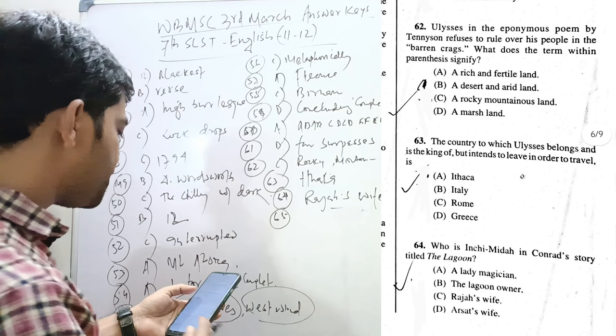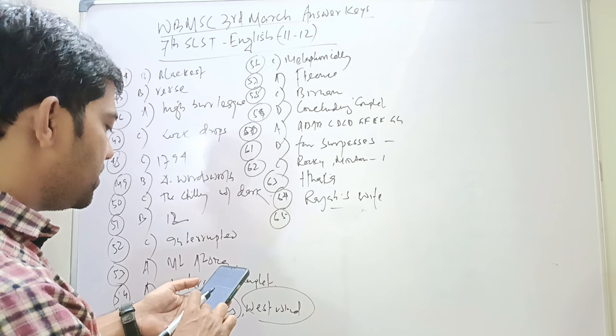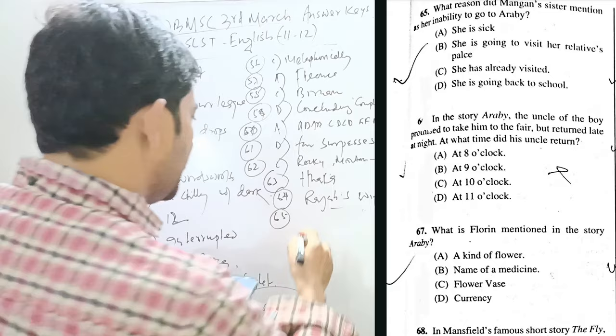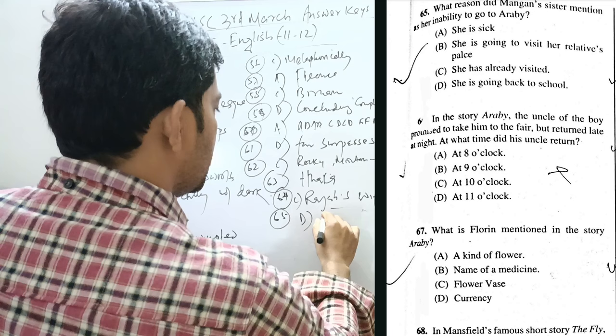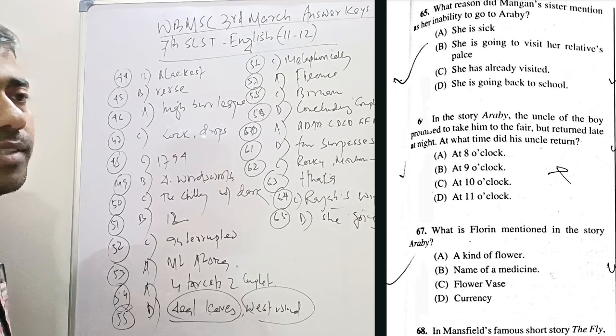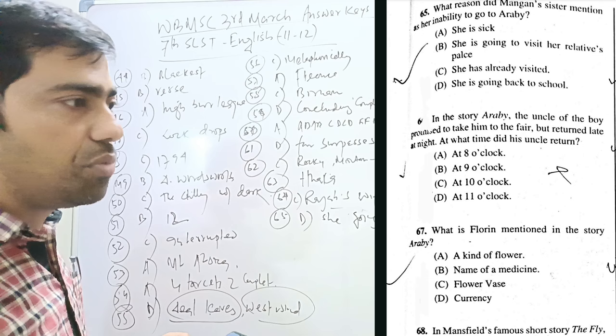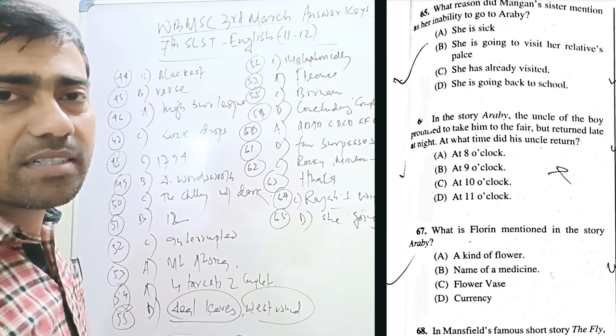What reason did Mangan's sister mention as her inability to go to Araby? So, she is going back to school. She expressed her inability to go to Araby because some retreat were there in a convent school.